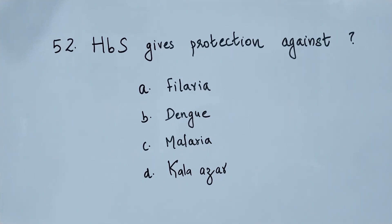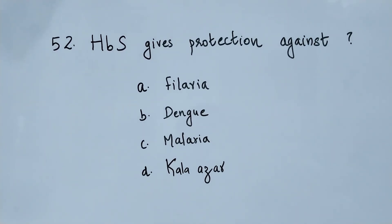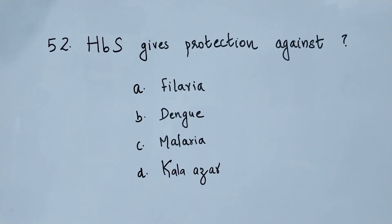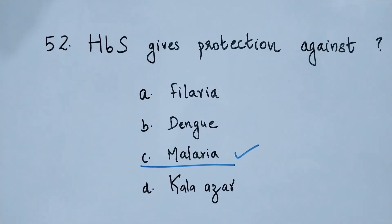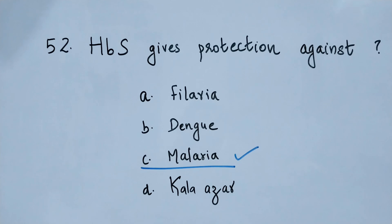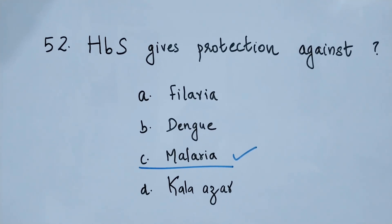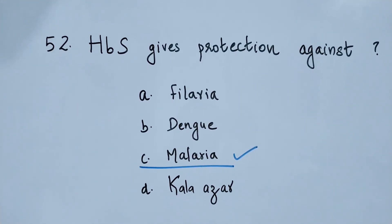Question number 52. HbS or sickle hemoglobin gives protection against: option A filaria, option B dengue, option C malaria, option D kala azar. The right answer is option C, malaria. Hemoglobin S or sickle hemoglobin gives protection against malaria. The protection is mainly given by its sickle shape.